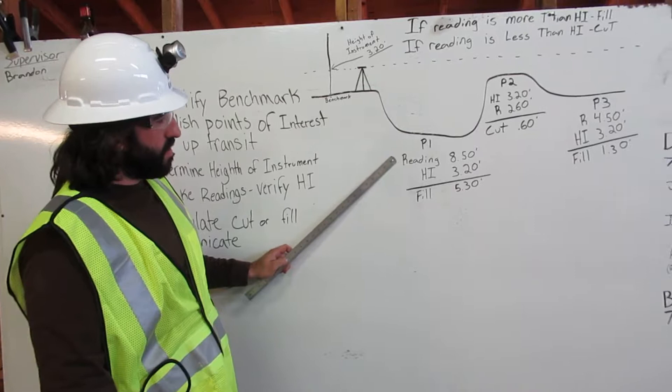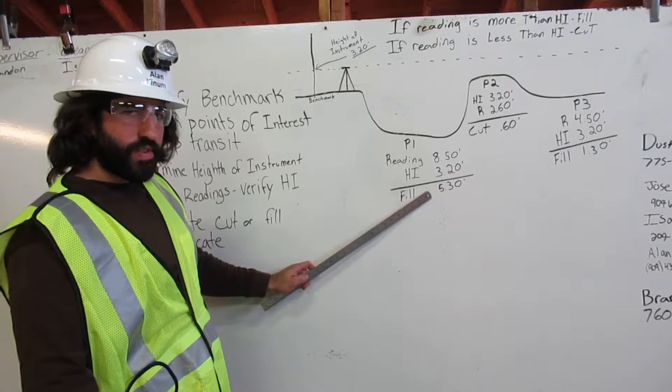At point one, our reading is 8.50 feet and our height of instrument is 3.20 feet. We subtract those and get 5.30 feet and we are going to fill.